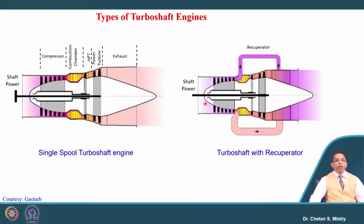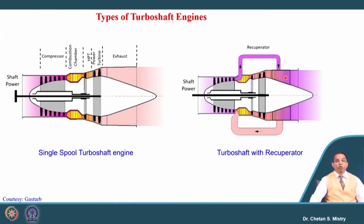Here we have a construction that is slightly different. If we look carefully, the exhaust coming out from the compressor is supplied to a recuperator. This kind of configuration we have discussed for the turbofan engine and the turboprop engine. The whole purpose is to reheat the air going into the combustion chamber, thereby increasing fuel efficiency. In the last lecture we discussed the application for military tanks where the focus is on fuel economy, and people use this kind of configuration.